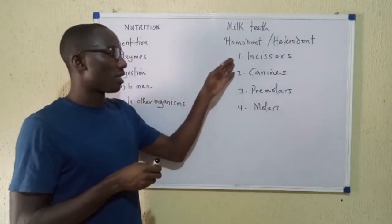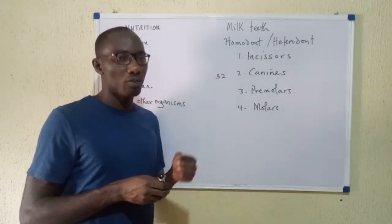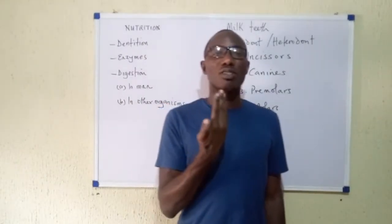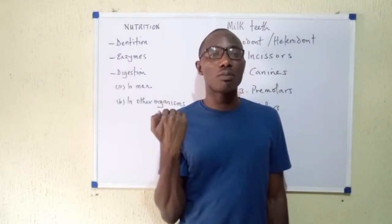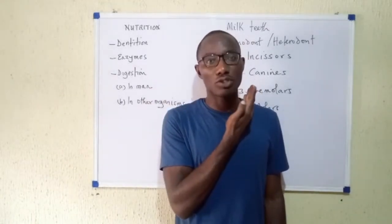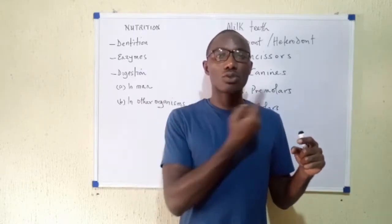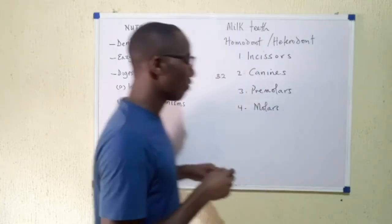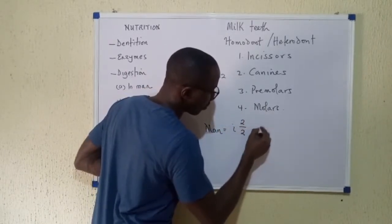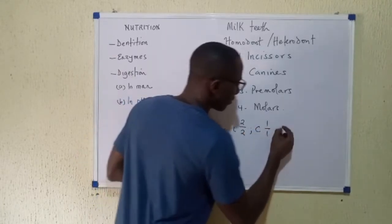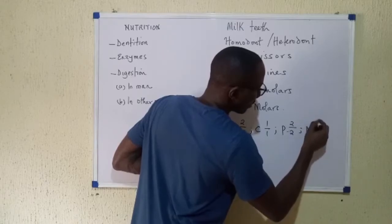The number of each type of tooth can be represented in what we call a dental formula. A dental formula is a representation that tells us the number of teeth in one half of the jaw of an organism. Using man as an example, the dental formula shows the teeth on one side, so the numbers must be multiplied by two to get the total. For man, the dental formula is: incisors 2/2, canines 1/1, premolars 2/2, and molars 3/3.